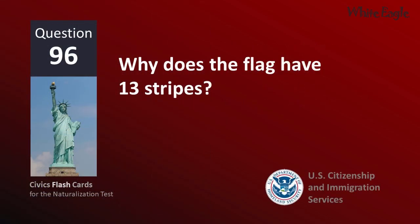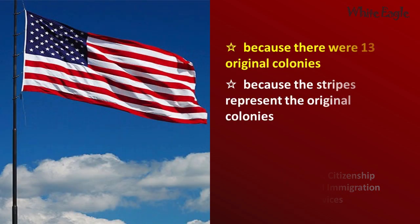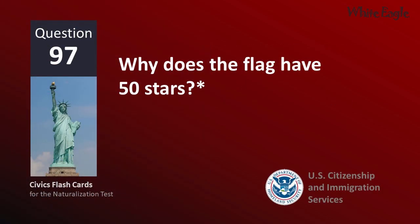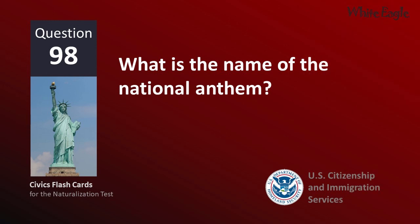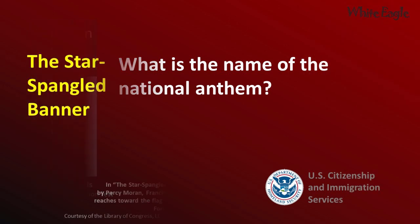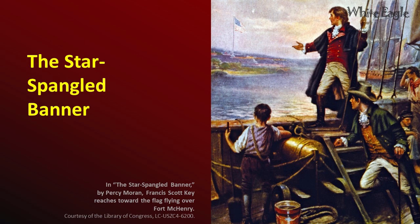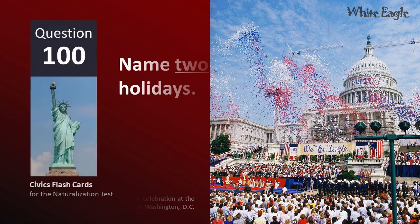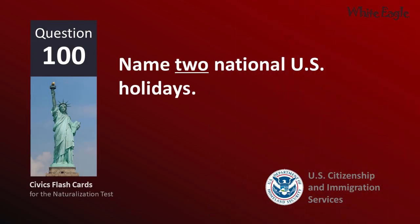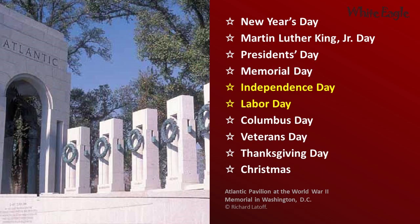Why does the flag have 13 stripes? Because there were 13 original colonies. Why does the flag have 50 stars? Because there are 50 states. What is the name of the national anthem? The Star-Spangled Banner. When do we celebrate Independence Day? July 4th. Name two national U.S. holidays. Independence Day. Labor Day.